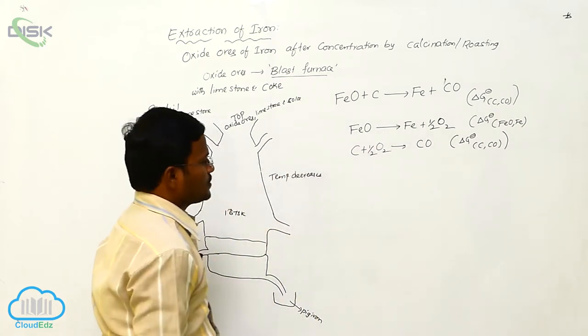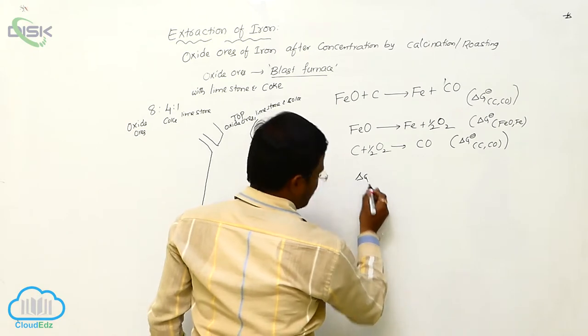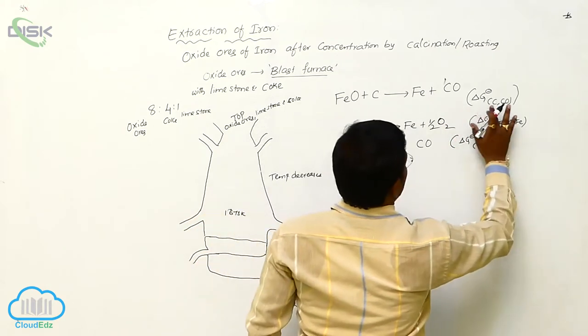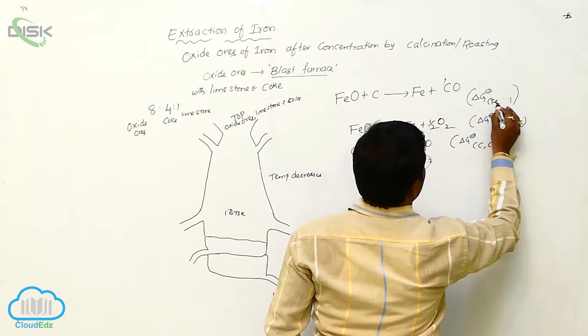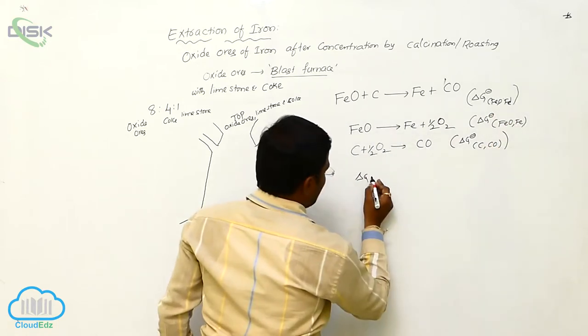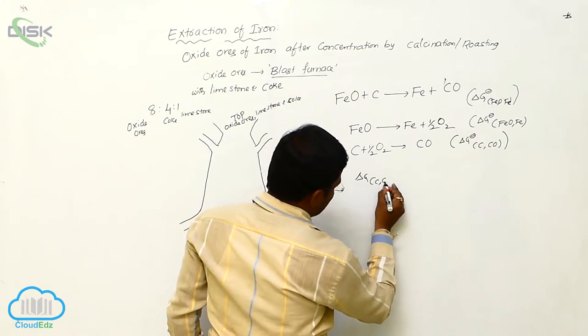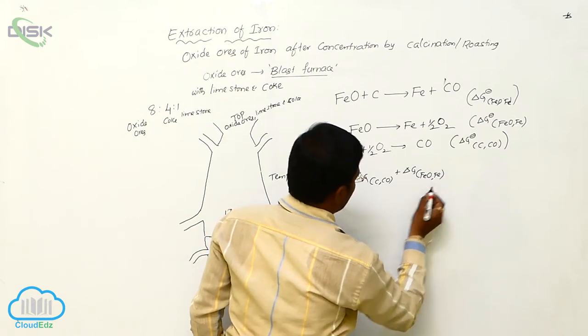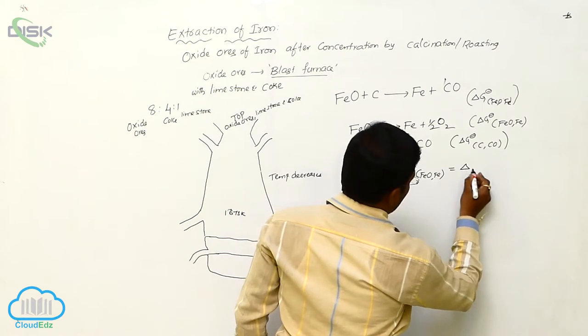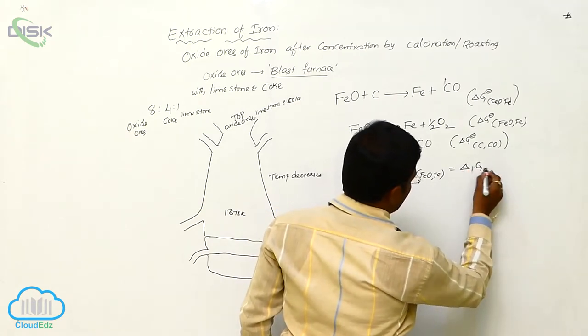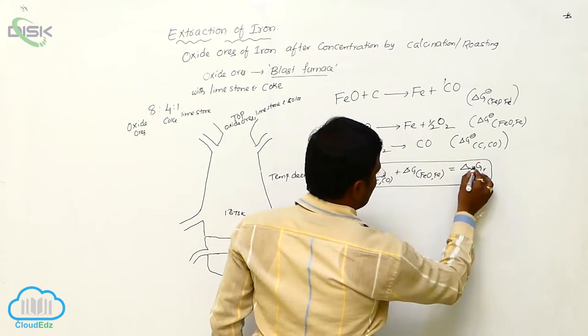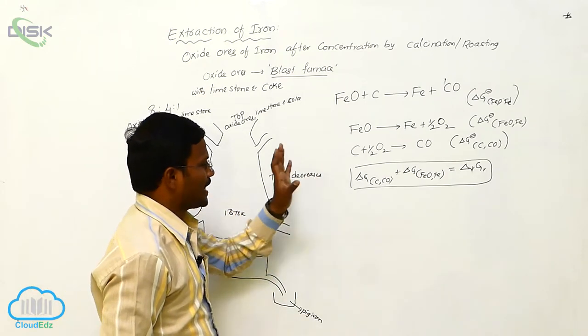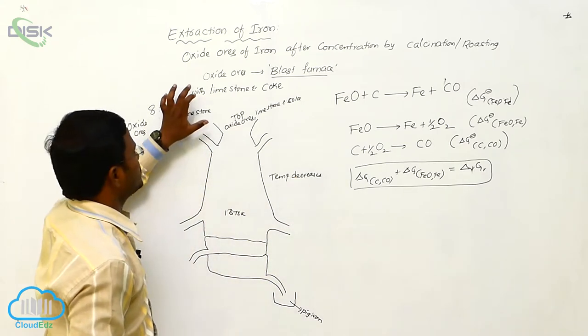During this process, delta G, delta G, delta G for FeO converted into Fe. Delta G equals to delta G. During this process, there is evaluation or separation or extraction of iron that takes place from its iron ores.